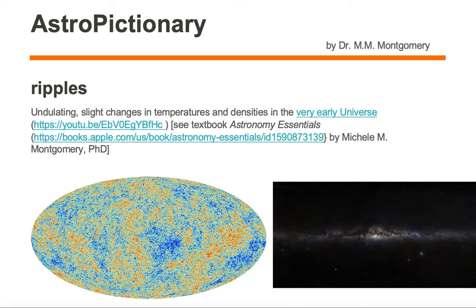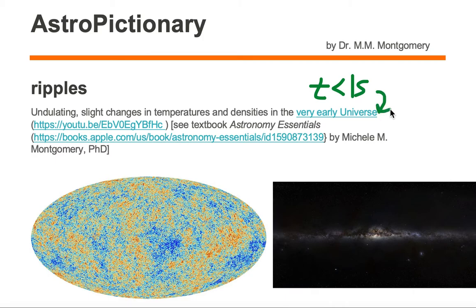Ripples are undulating slight changes in temperatures and densities in the very early universe. The very early universe is a time in the history of the universe between zero and one second. Although we cannot see ripples from the time of the very early universe, we can see the imprints of ripples in the cosmic microwave background.